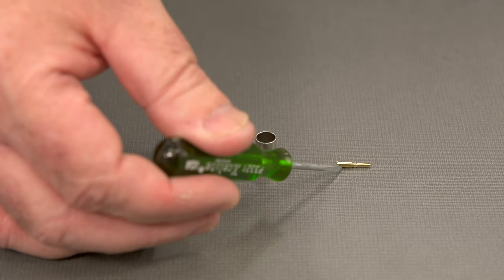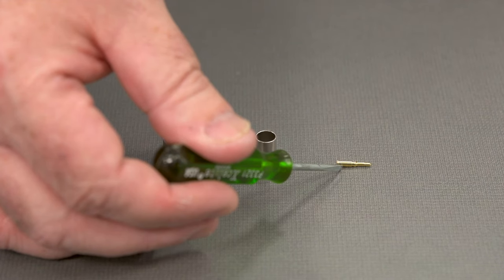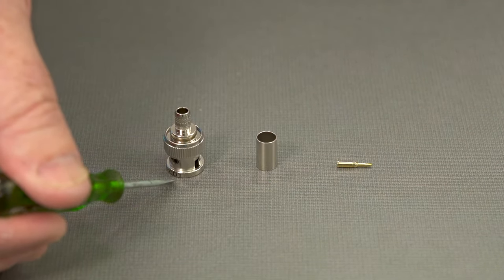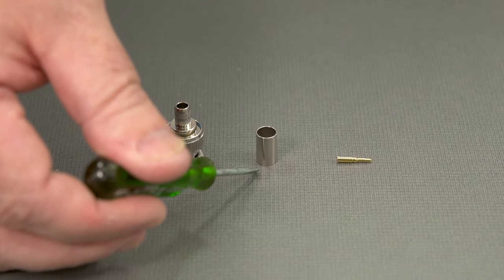There's a center pin which will go over the center conductor of the coax cable. There's the main body of the BNC connector, and then there's the ferrule which will crimp on and that will hold everything together.